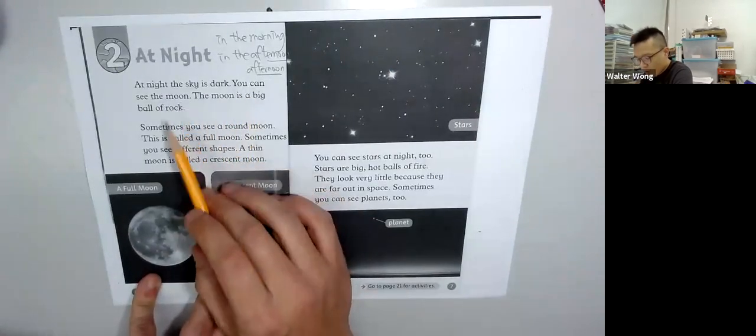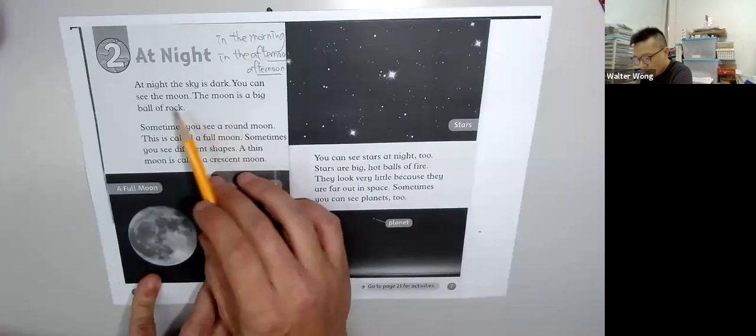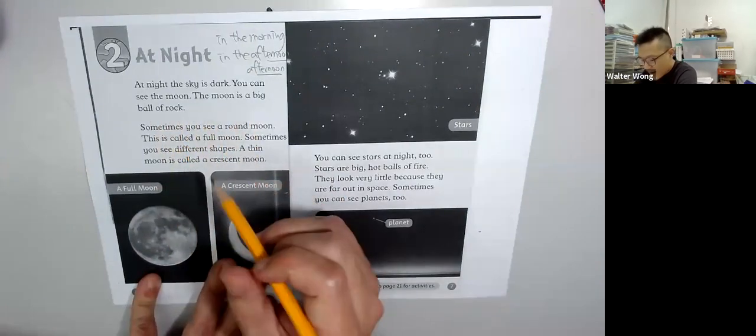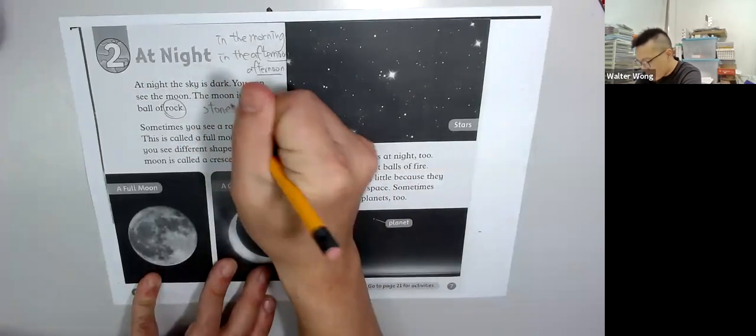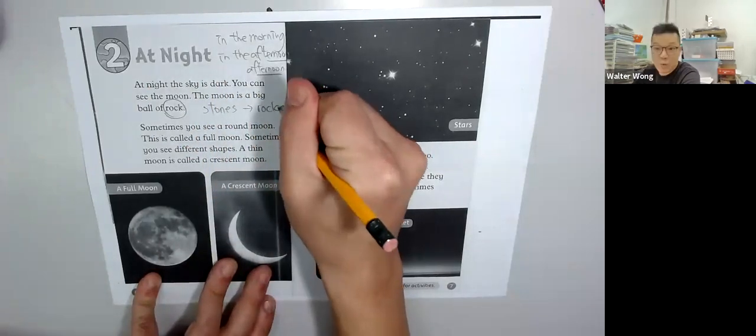You can see the moon. The moon is a big ball of rock. 其實一塊石頭,很大塊石. Small rocks we call stones, big rocks we call rocks. Can be very big rocks.